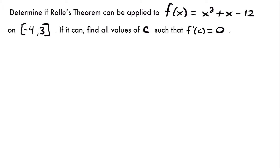The first thing we want to check is whether this function is continuous and differentiable on this interval. Since our function is a polynomial, we know it's going to be continuous everywhere. This isn't a rational function where we might have an undefined value, and there are no absolute value bars that might cause a point to be non-differentiable. So we can confirm it is continuous and differentiable on the given interval.